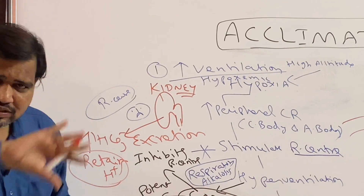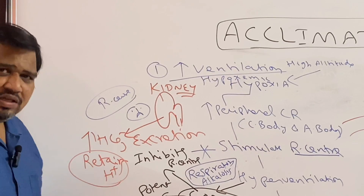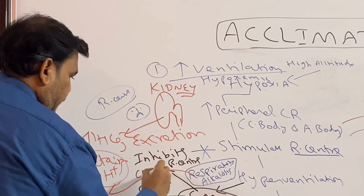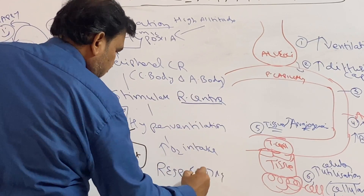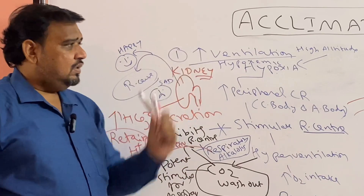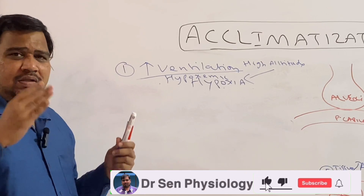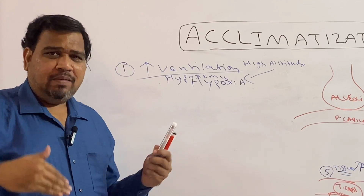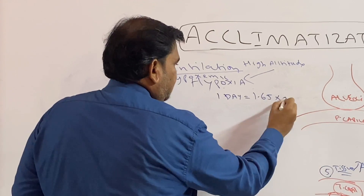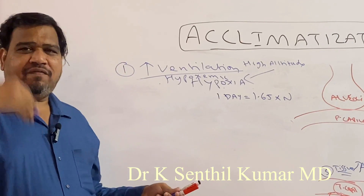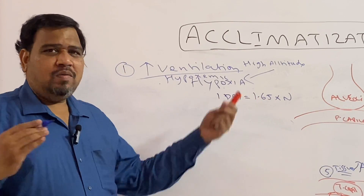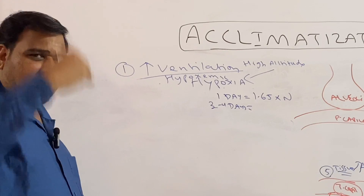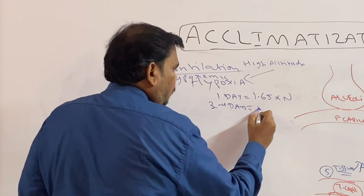This compensates the respiratory alkalosis and the respiratory center is stimulated again. Regarding the timeline: on day one of ascent, ventilation is increased 1.65 times. After three to four days of climbing from sea level, ventilation is increased to almost four to five times normal.